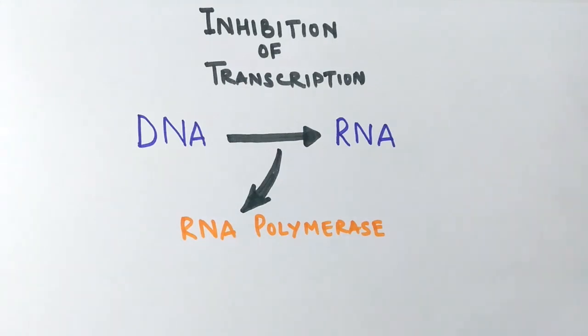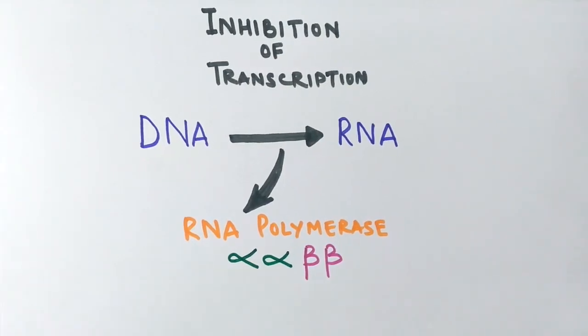This RNA polymerase consists of four subunits: two alpha units and two beta units. Basically, there is another subunit that makes the RNA polymerase holoenzyme, which is the sigma factor. This sigma factor is only for transcription initiation purposes. After it initiates the transcription, it dissociates again.